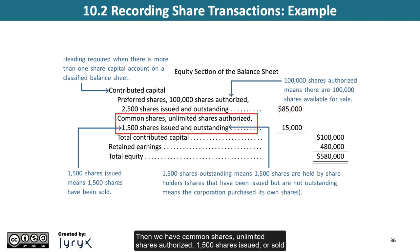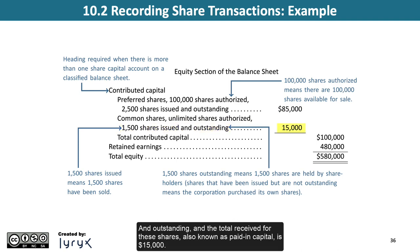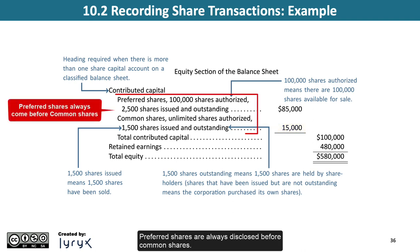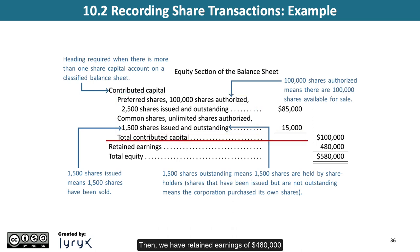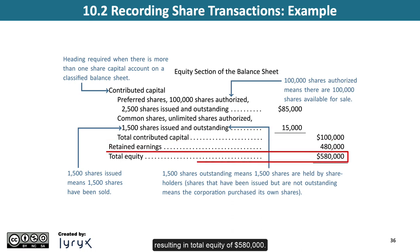Then we have common shares: unlimited shares authorized, 1,500 shares issued and outstanding, and the total received for these shares — also known as paid-in capital — is $15,000. Preferred shares are always disclosed before common shares. Then we have retained earnings of $480,000, resulting in total equity of $580,000.